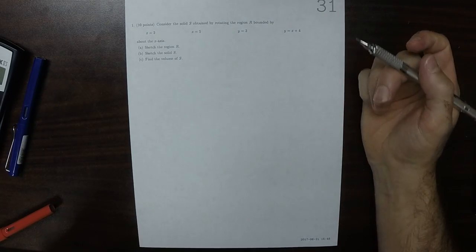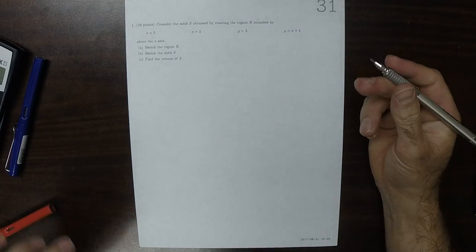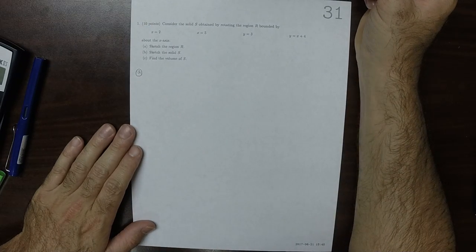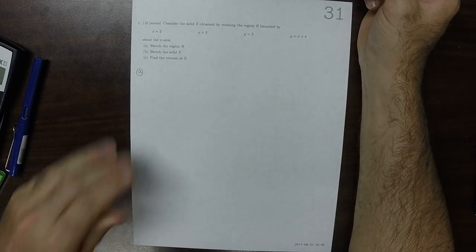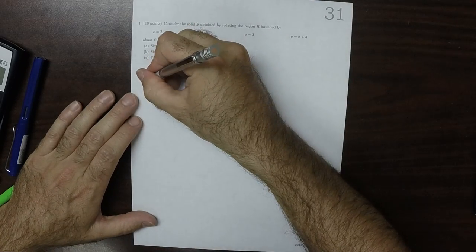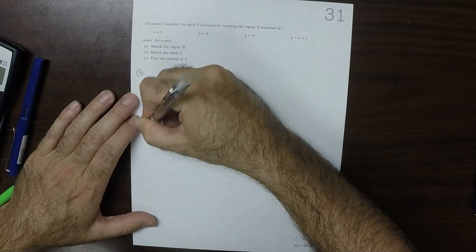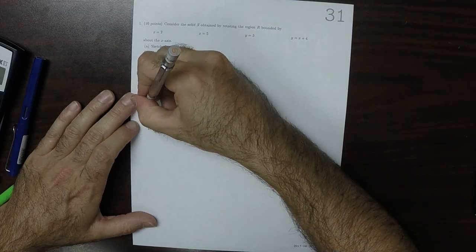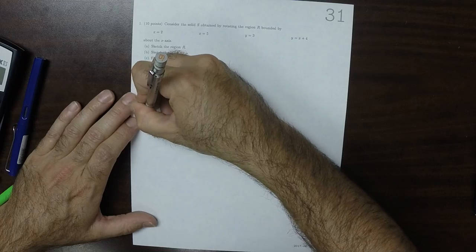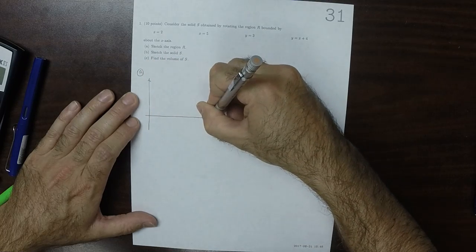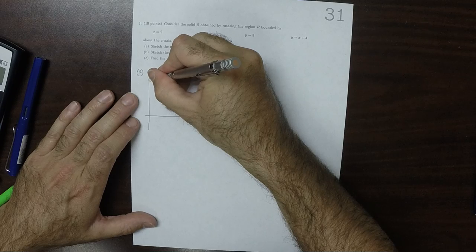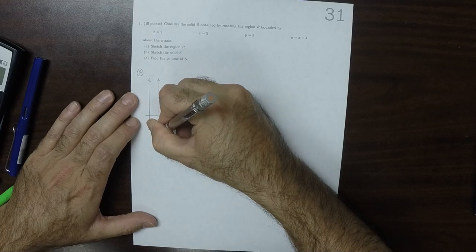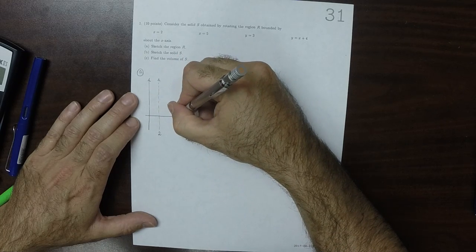This is the solution to written homework 31. So for part A, it looks like this. We've got a vertical line at x is 2, and another vertical line at x is 5.